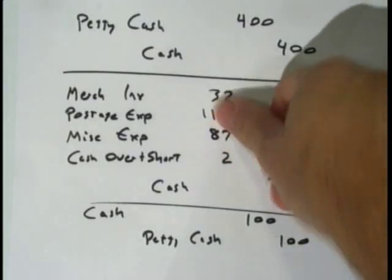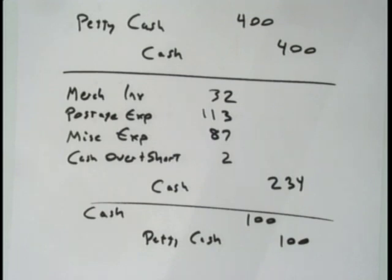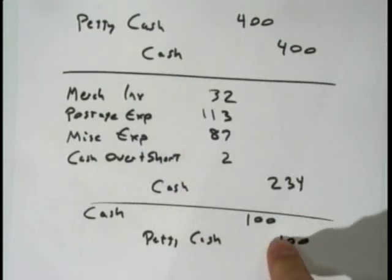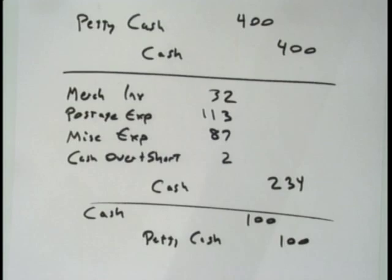If you come out over by $2, you put the $2 on the credit side — the steps figure it out for you. Cash over and short is an income statement account. If it has a net debit balance it's an expense; if it has a net credit balance it will be revenue.